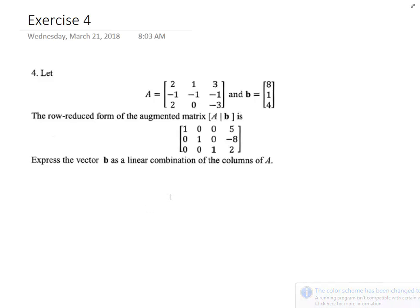Okay, this next one is pretty short. You're given a matrix A and a vector, and you're given the row-reduced form of the augmented matrix, and you want to express the vector as a linear combination of the columns of A.